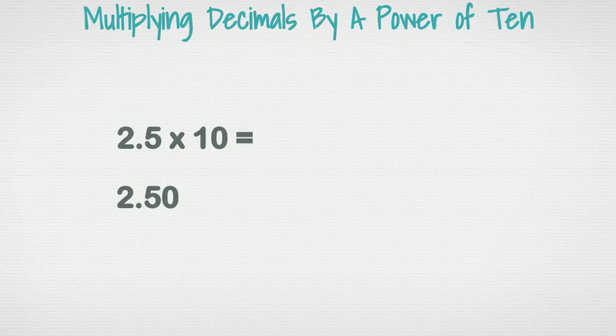Look at that for a second. That is basically the same thing as 2.5. Nothing changed. Adding a zero to the end doesn't change the value of a decimal. When multiplying a decimal by a power of ten, the steps change slightly.